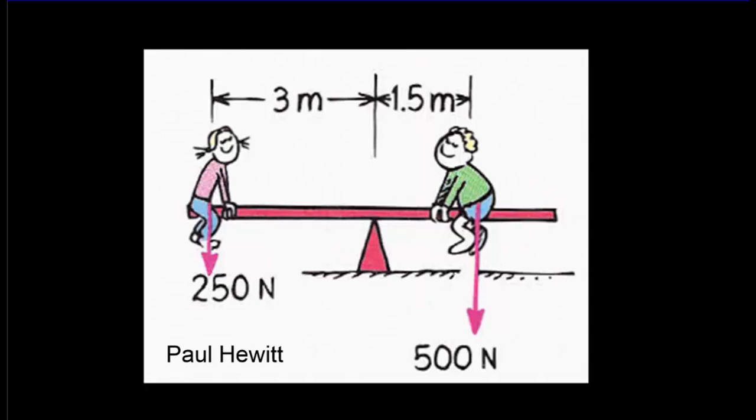Here we've got two children on a teeter-totter, and they're in balance. The teeter-totter isn't moving.